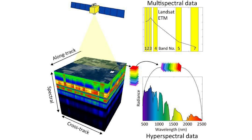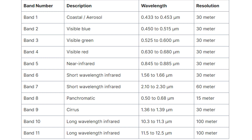For example, Landsat 8 produces 11 images and each band consists of a specific spectral resolution. Each band has a spatial resolution of 30 meters, except for bands 8, 10, and 11. The panchromatic band has a spatial resolution of 15 meters, while its thermal bands have a 100 meter pixel size.